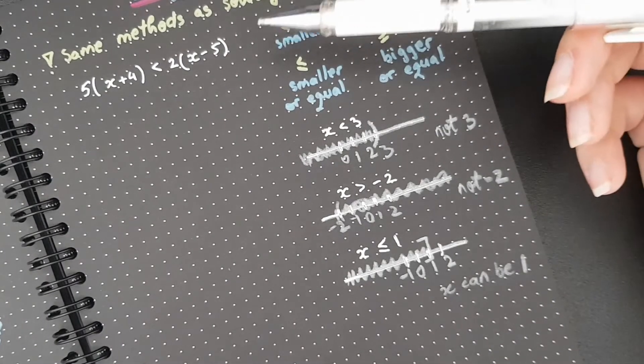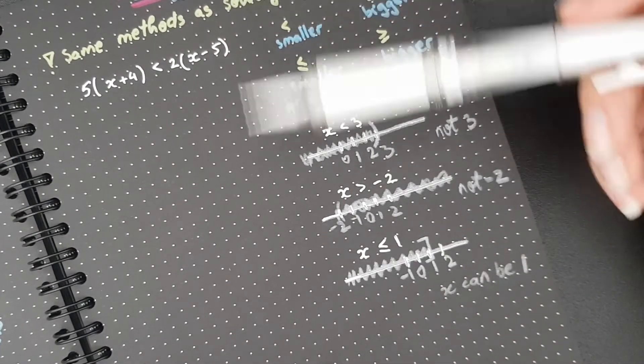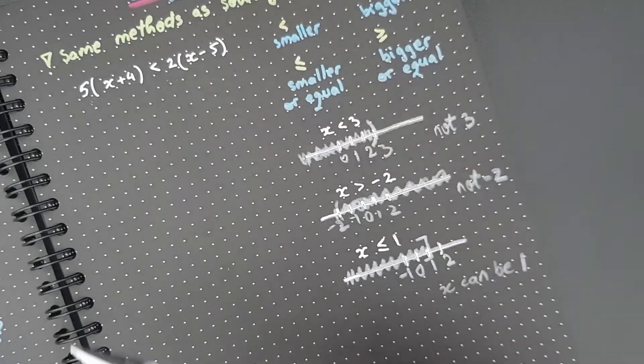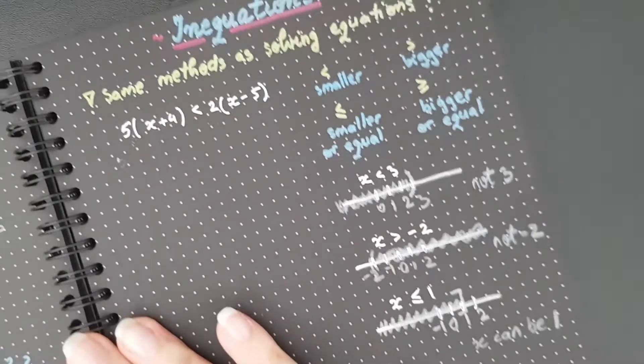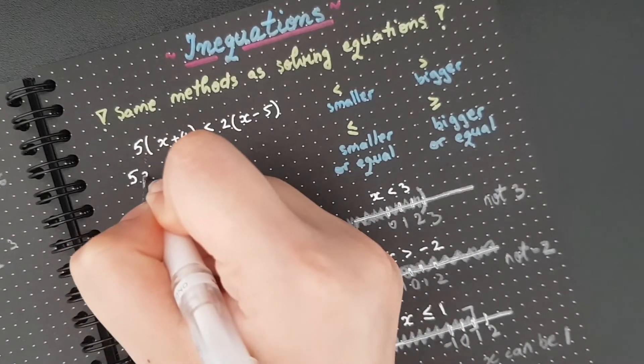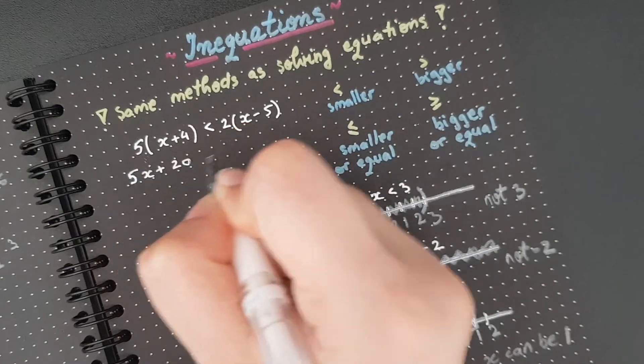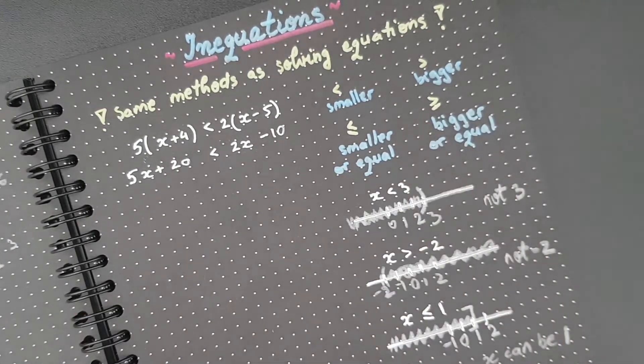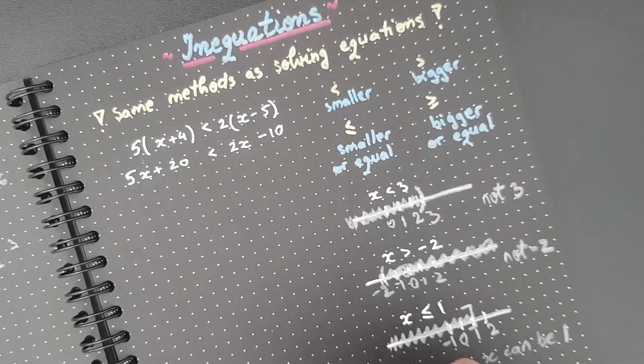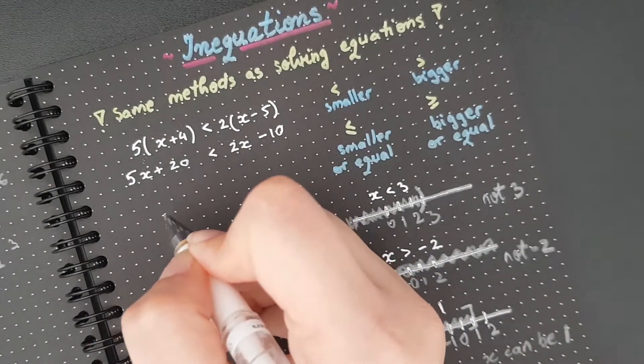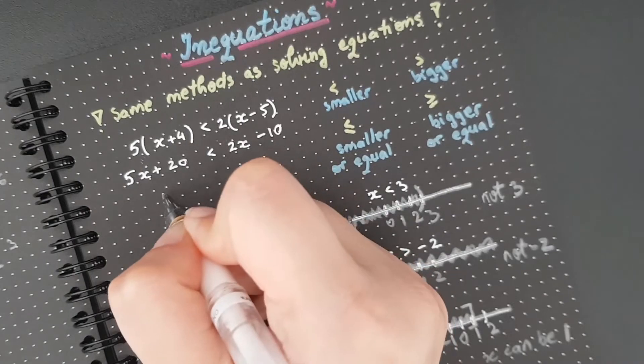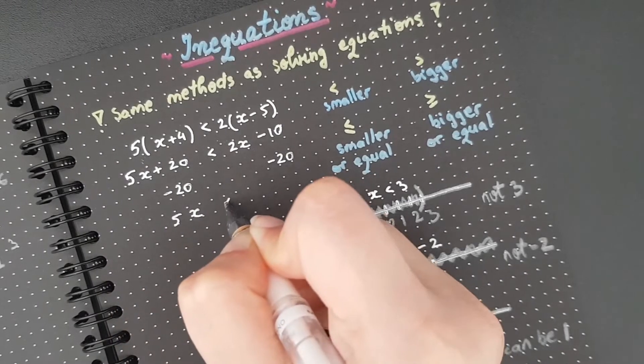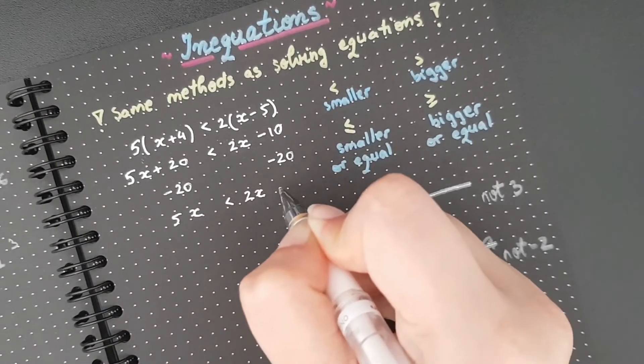Now, if you have seen my videos on solving equations, I'm just going to follow on exactly the same ideas. So the first thing, I'm going to multiply the brackets together. So I've got 5x plus 20 smaller than 2x minus 10. Now, again, this is one of my favorite type of questions because I can choose whatever I want to do. And I am in the mood of looking at the numbers. So I'm going to take away the 20 first. So I'm left with 5x here, smaller than 2x. Take away 30.